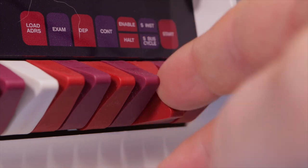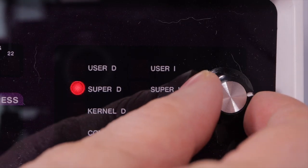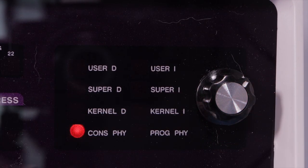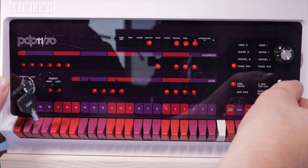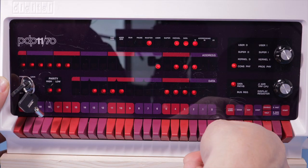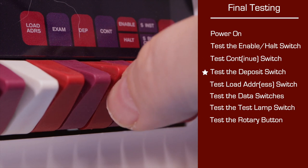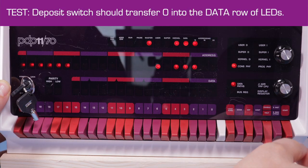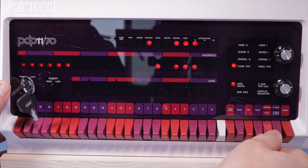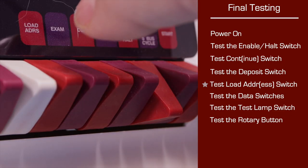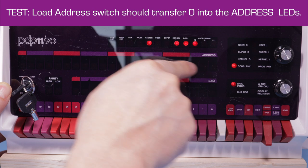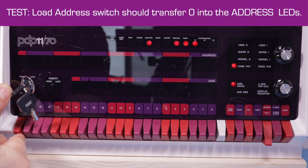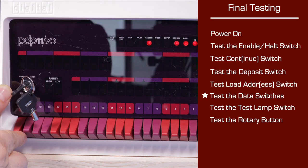Halt the machine again. Now twist that top rotary dial until it's in the config position. With all the data switches 0 to 21 down, lift the deposit switch. That should clear the bottom row of LEDs. That validates the deposit switch is working. So the next thing we'll do is press the load address switch. And that should enter the switches into the contents of the top row of LEDs. That verifies the load address switch.